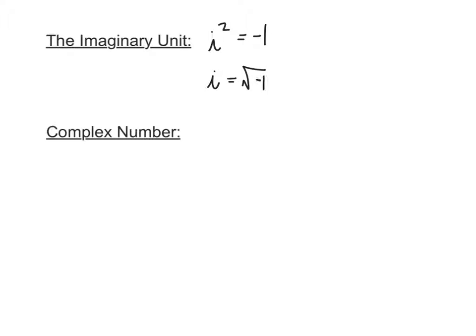That's the imaginary unit, because we can't take the square root of a negative number. However, we need it in order to solve some quadratics. The complex number is going to be any number in the form a plus bi, where a and b are both real numbers. So a complex number has a real part and an imaginary part.